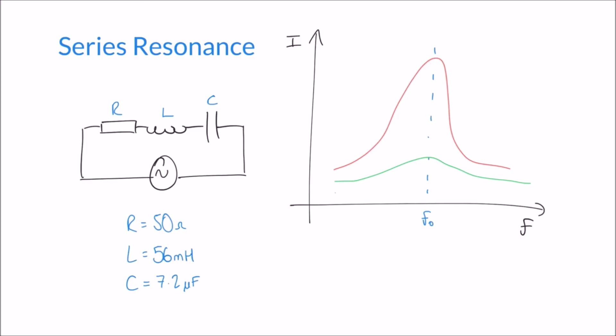Something with a small Q factor would show only a small peak on the current-frequency graph — not much benefit from resonance. We can summarize this with the formula Q equals X over R. You might ask which reactance — the capacitor's or the inductor's. The answer is it doesn't matter, because at resonance the two are equal. By calculating either reactance and comparing it to the resistance, we get the Q factor.